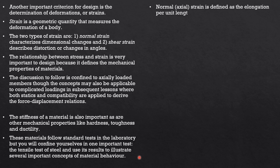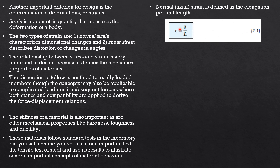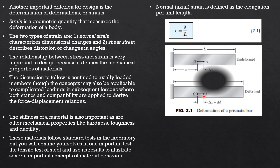The normal or axial strain is defined as the elongation per unit length, expressed mathematically as deformation — either elongation or contraction — divided by the length of the specimen. This is illustrated using a specimen in its undeformed shape, where the total length is L. From the fixed end to point O, the length is x, and the distance between points O and A is delta x.